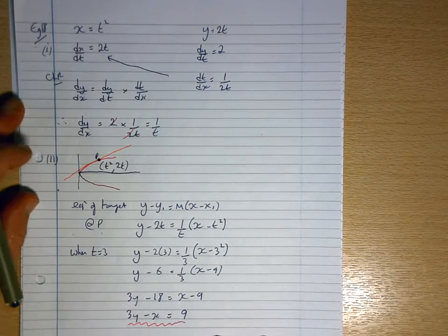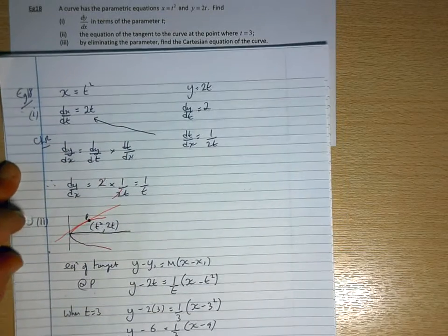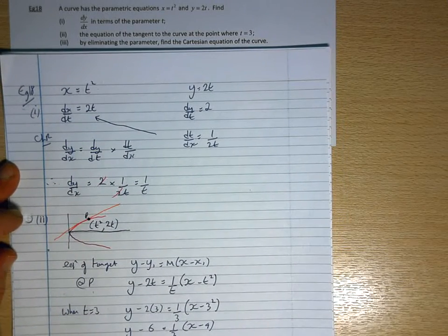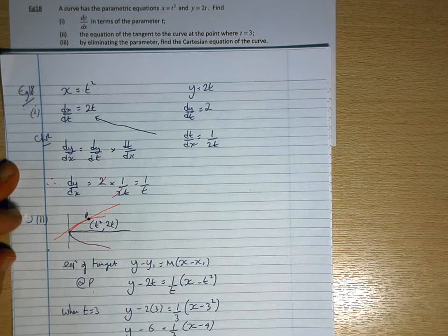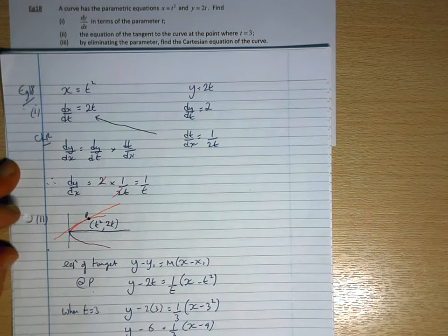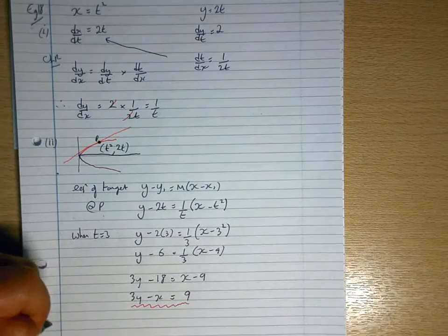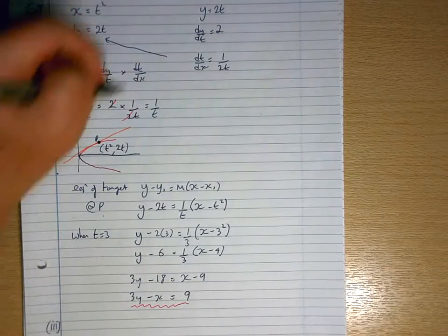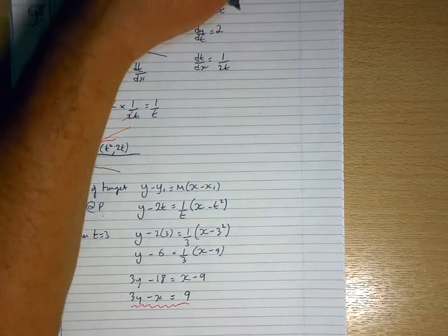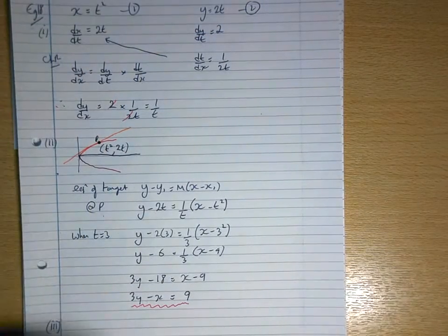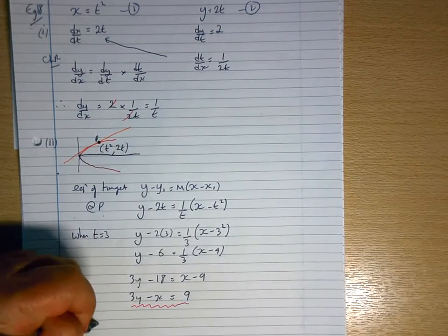So that's part 3. Sorry, part 2. And then part 3. Well, we've already done this in the previous question. By eliminating the parameter, find the Cartesian equation of the curve. So if I call that equation 1, that equation 2, from 2,